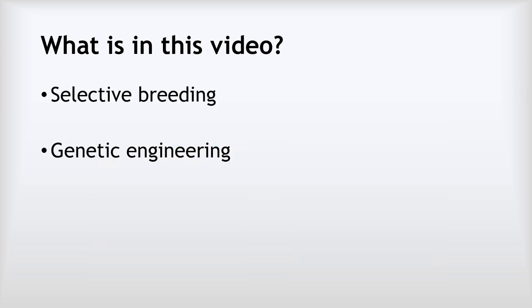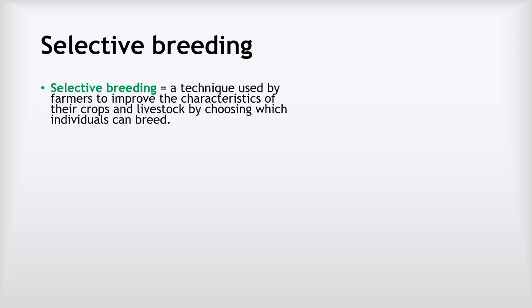In this video we are just going to look at two things but in quite a lot of detail. Those two things are selective breeding and genetic engineering. So let's start by looking at selective breeding. Selective breeding is a technique used by farmers to improve the characteristics of their crops and livestock by choosing which individuals can breed.